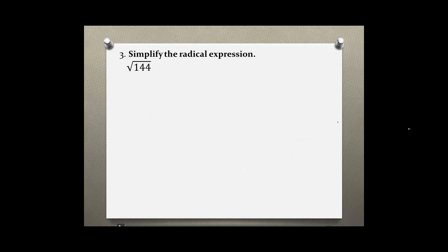Problem number three: simplify the radical expression. We have the square root of 144. If you don't see the index, the index is always 2. We have to find the number that you multiply by itself to get 144.